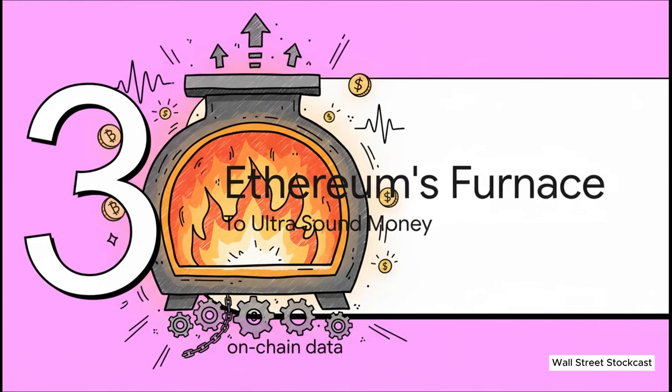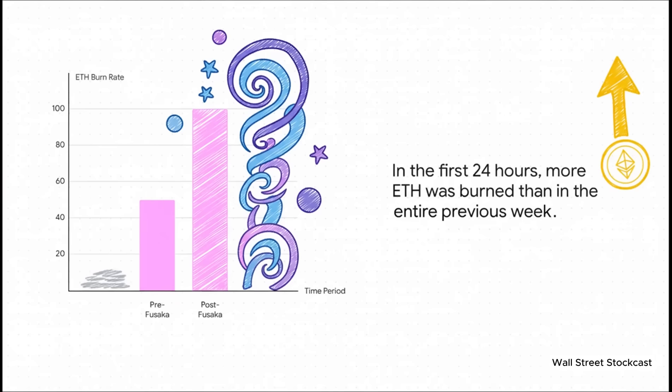Alright, so that's the theory. It's a cool economic argument, for sure. But is it real? Is this actually happening? Well, let's turn to the on-chain data. Because the proof of this furnace firing up is immediate. And, according to this analysis, it's undeniable. And whoa, the on-chain data is pretty startling.